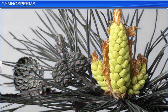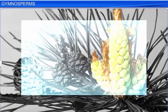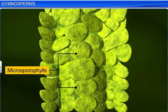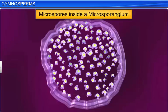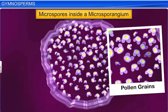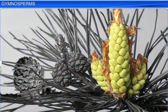The male strobilus has spirally arranged leaf-like structures called microsporophylls, which bear microsporangia — a structure that produces haploid microspores. A few microspores develop into male gametes called pollen grains, and the rest degenerate. Another name for the male strobilus is the microsporangiate strobilus.